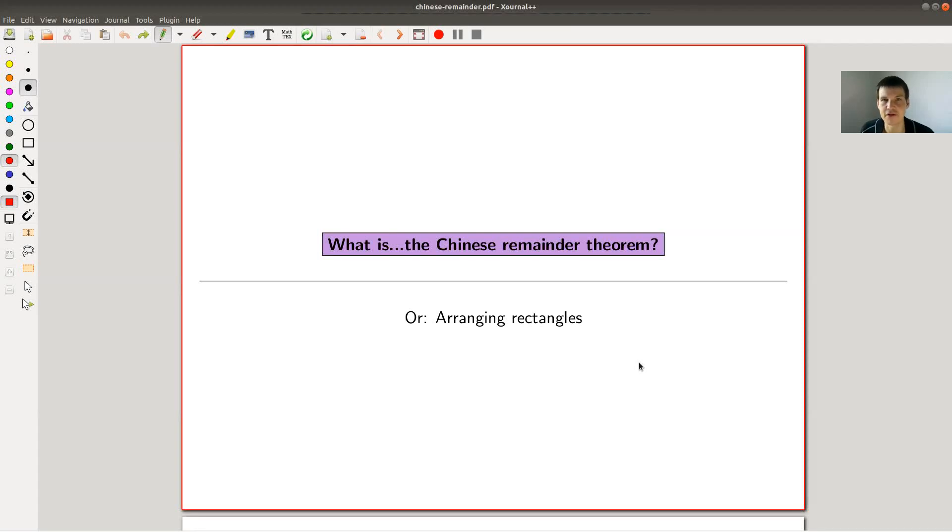Okay, welcome everyone to my continuation of what is algebra. Today, the so-called Chinese remainder theorem, which is one of the oldest puzzles in the history of mathematics, or some version, some theorem corresponding to one of the oldest puzzles in the history of mathematics.